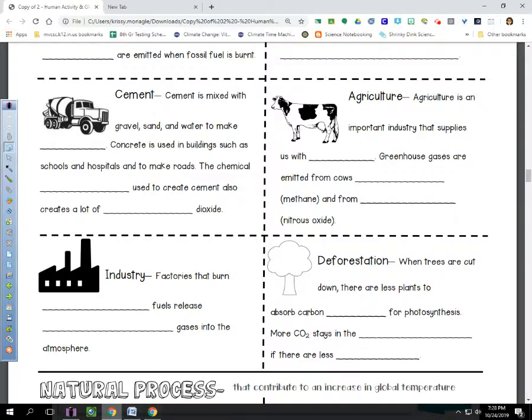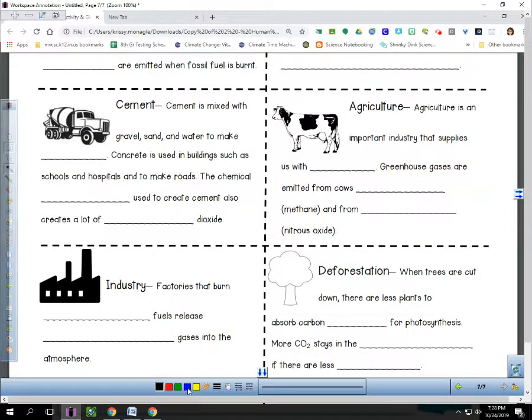Cement. Cement is mixed with gravel and sand and water to make concrete. Then concrete is used in buildings like schools and hospitals and to make roads. The chemical reaction used to create cement also creates a lot of carbon dioxide.